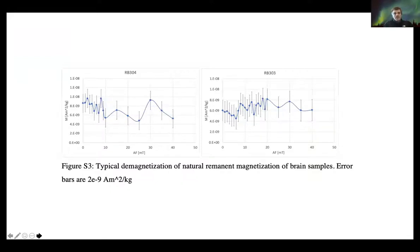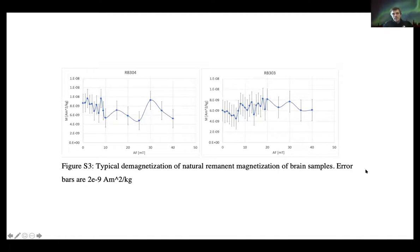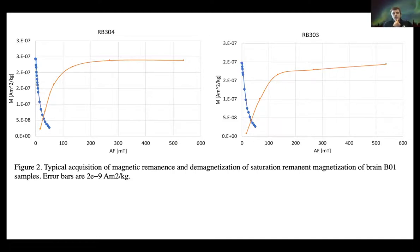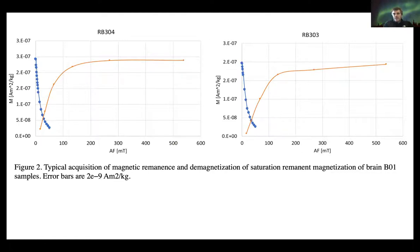Here is an example of a typical demagnetization of a sample — 'RB' means right hemisphere. The noise level is quite high and it is difficult to demagnetize samples using alternating fields up to 40 millitesla. When you saturate and then demagnetize them, the intercept of the two curves is quite low, indicating a negative interaction. The material is also quite soft in terms of demagnetization.